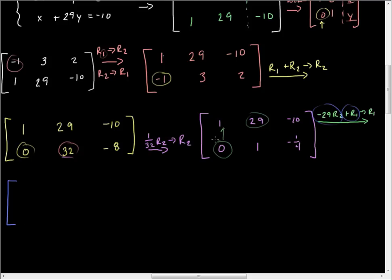Negative 29 row 2 plus row 1 will go into row 1. In dark blue here, we have negative 29 times 0 is 0, plus 1 is 1. Don't forget to write down the stuff that stays put. On the second column, we have negative 29 times 1 is negative 29, plus 29 is 0. Negative 29 times negative 1/4 is positive 29/4. I have to add that to negative 10. Negative 10 in quarters is negative 40/4. So positive 29 minus 40 gives me negative 11/4.